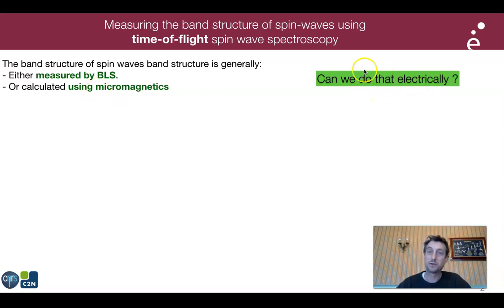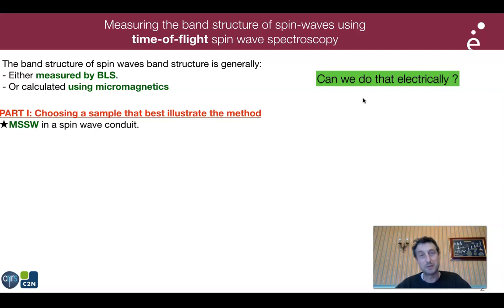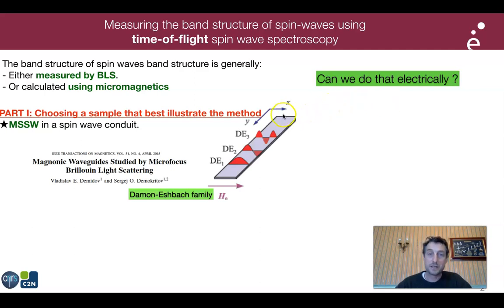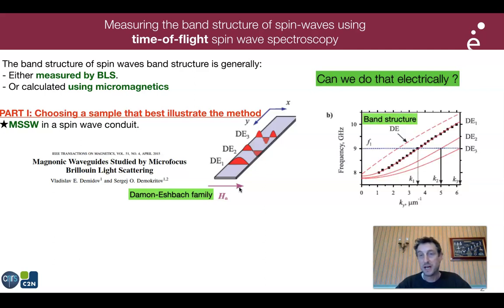The question I want to address today is whether we can do that electrically. I will illustrate my method with samples essentially inspired by the works of Demokritov and co-workers, who have shown that if you use a magnetic stripe magnetized in a transverse direction, you can have several quantized spin waves within the width of the stripe with a complicated band structure.